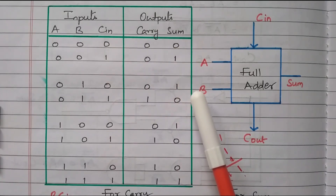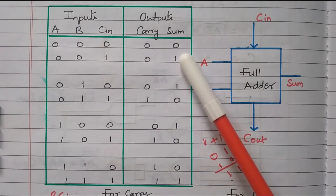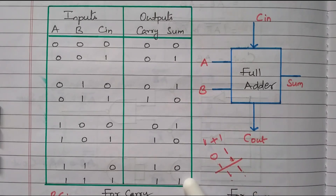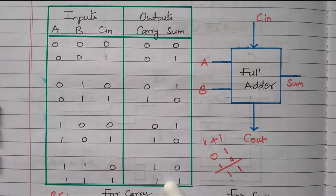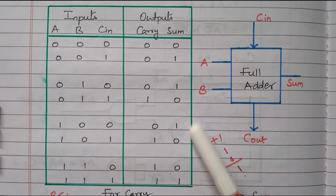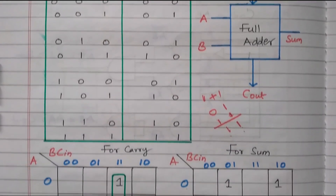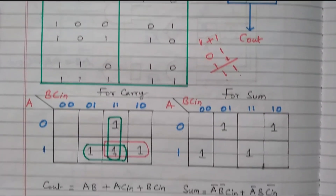Now we need to get the simplified expression for carry-out as well as sum, in order to implement the logic circuit. We use the Karnaugh map (K-map). There are four 1s available for sum, and similarly four 1s for carry-out. These 0s and 1s are marked in the K-map, and by grouping the cells we can get the simplified expression for both sum and carry.